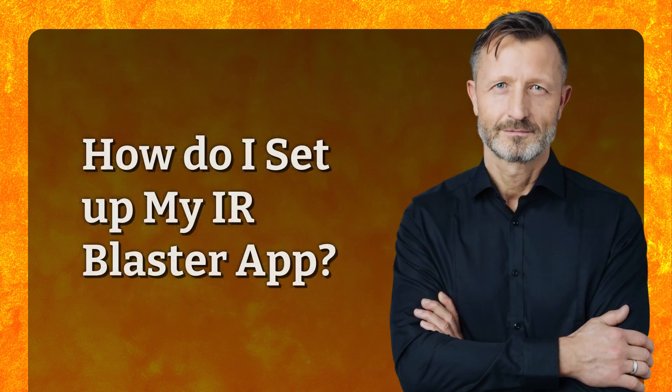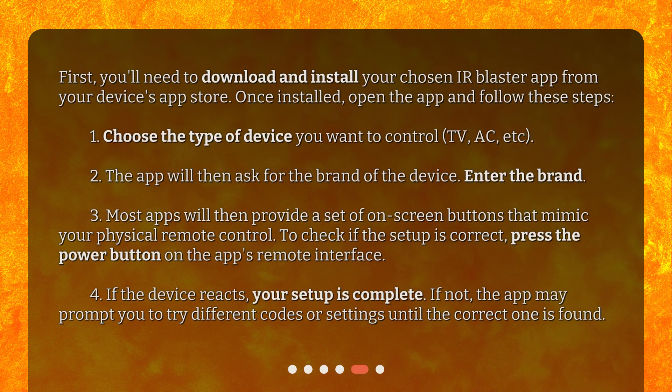First, you'll need to download and install your chosen IR Blaster app from your device's app store. Once installed, open the app and follow these steps. The app will then ask for the brand of the device — enter the brand.